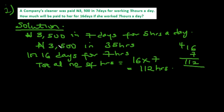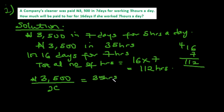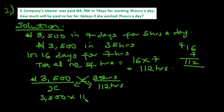Now let's convert this to a proportion. We have 3,500 naira over x naira equals 35 hours over 112 hours. Make sure the values with the same units are on the same side. We cross multiply: 3,500 multiplied by 112 equals 35 multiplied by x.